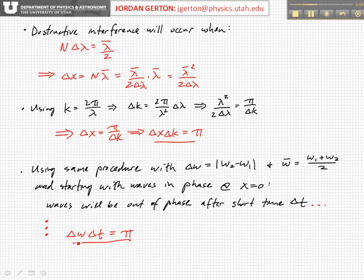So the uncertainty or the spread in frequency values times the uncertainty in the time from when the wave is in phase to the wave is out of phase is equal to constant π. And so again, the better we know the frequency, the more uncertain we are on the temporal spread of the wave function.